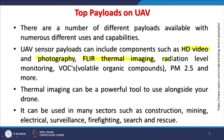UAVs can also be used to monitor radiation levels, because going into areas where radiation may be very high is dangerous for humans, but such machines can be sent for those surveys. Also, volatile organic compounds and particulate matter of PM 2.5 and more — where human presence is not safe — UAVs can be used depending on the requirements.